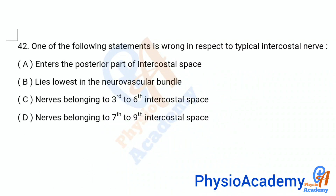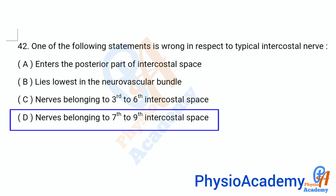Question number 42: One of the following statements is wrong in respect to typical intercostal nerve — option A: enters the posterior part of the intercostal space, option B: lies lowest in the neurovascular bundle, option C: nerve belonging to third to sixth intercostal space, option D: nerve belonging to seven to ninth intercostal space. The correct answer is option D.